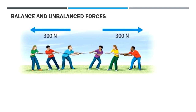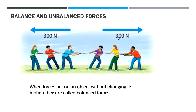Coming to balanced and unbalanced forces. In a tug of war, if both sides are applying the same force — say 300 newtons each — is there going to be any movement? No. When forces act on an object without changing its motion, they are called balanced forces. Balanced forces often point in opposite directions and always add up to zero: 300 minus 300 equals zero.